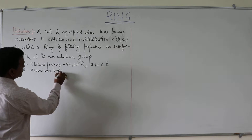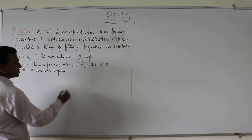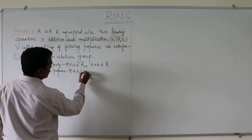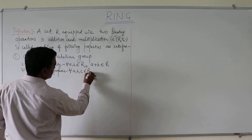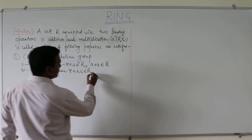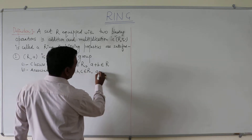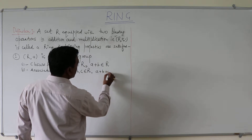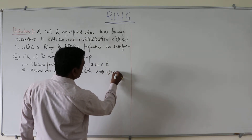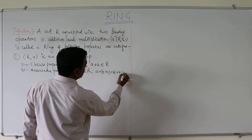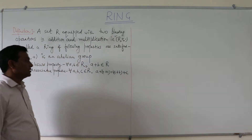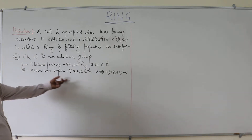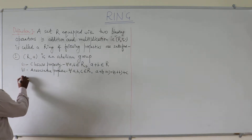The second property is the associative property. For all a, b, c belonging to R, we will have (a + b) + c equals a + (b + c). It should satisfy the associative property.